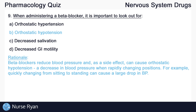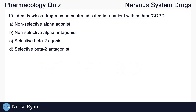Beta-blockers reduce blood pressure and, as a side effect, can cause orthostatic hypotension, which is a decrease in blood pressure when rapidly changing positions. For example, quickly changing from sitting to standing can cause a large drop in blood pressure.